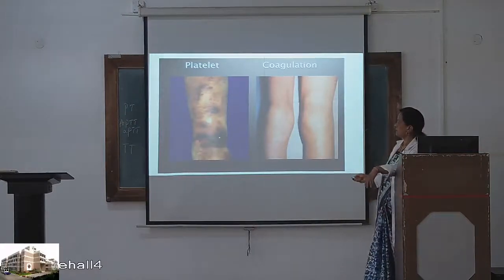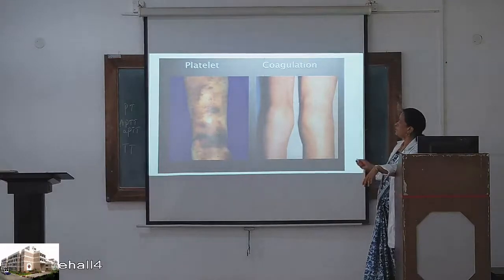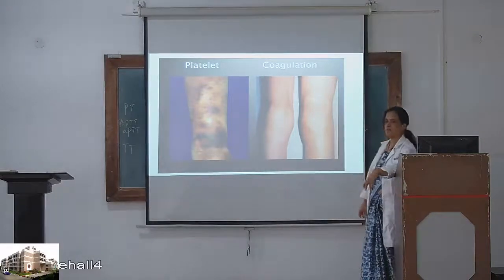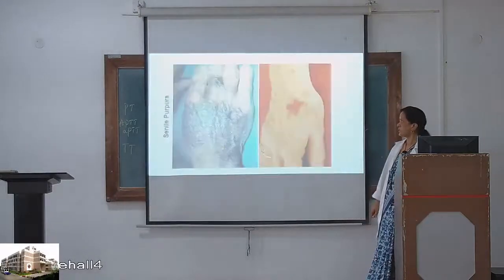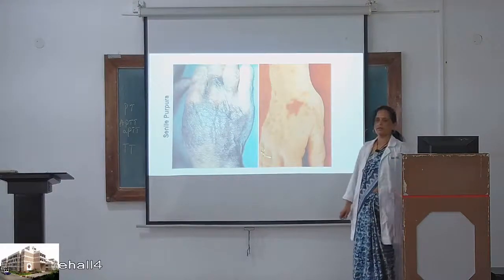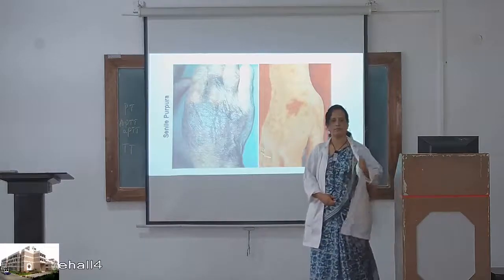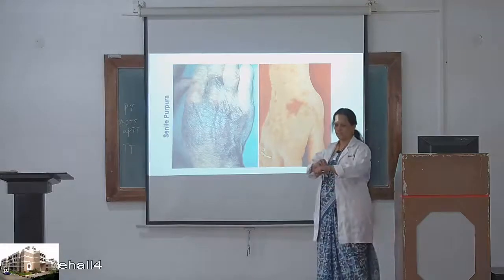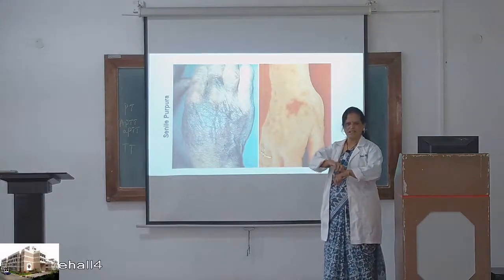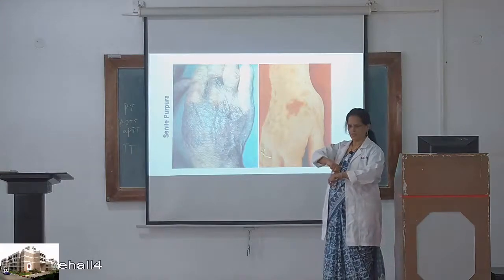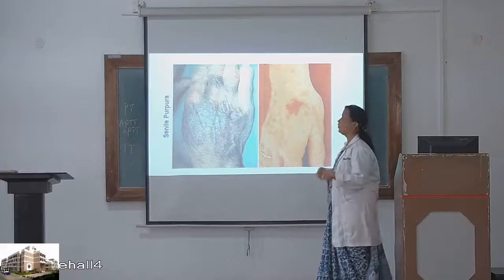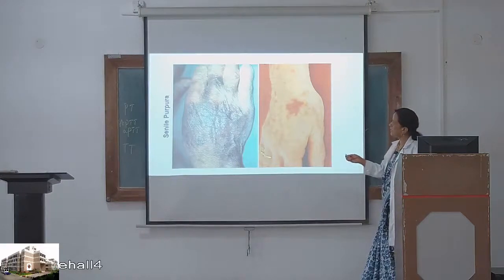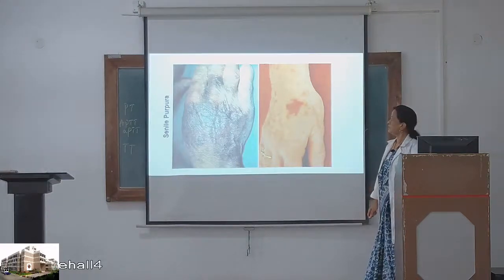Here I am showing platelet defect and coagulation defect. The amount of bleeding in coagulation defect is too much. There is bleeding in the joint — what we call hemarthrosis. Senile purpura is also an acquired condition in old age, because collagenization is diminished — senile skin becomes more elastic, losing elasticity as it does in youth.